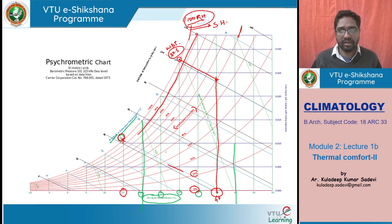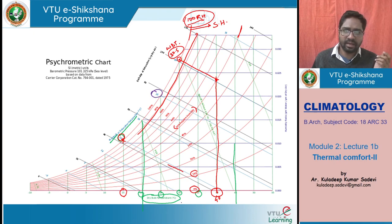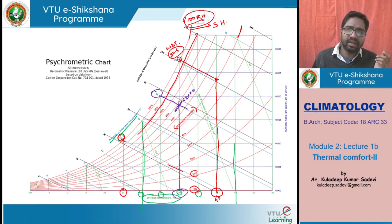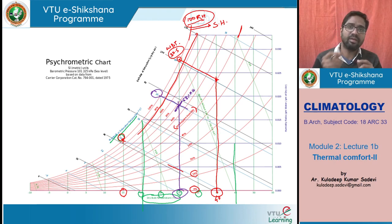Let us do another simple calculation. Say my wet bulb reading is 25 degrees centigrade and dry bulb reading is 30 degrees centigrade. Let us understand what is the RH here. The wet bulb line and dry bulb line, wherever they are meeting, we see where it is hitting the RH curve. This is 60, this is 70 — maybe about 68 percent RH. So at 68 percent RH, if the dry bulb is 30 degrees centigrade, my wet bulb will be roughly about 25 degrees centigrade. This is how we can plot and understand different atmospheric conditions.